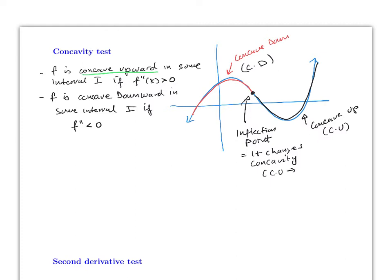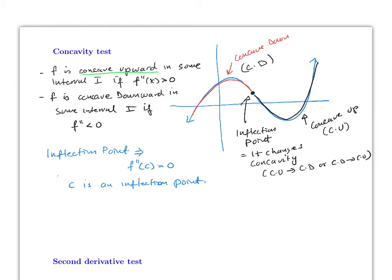The inflection point is where the function changes concavity — from concave up to concave down, or vice versa. To find the inflection point, set the second derivative equal to zero: c is an inflection point if f''(c) = 0 (and the concavity actually changes there).